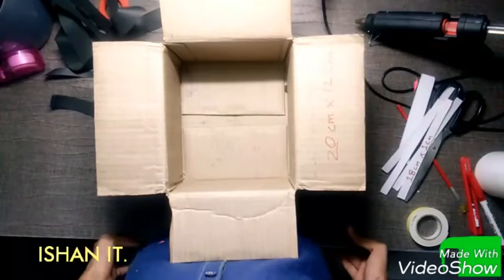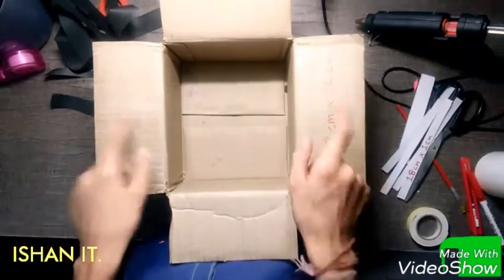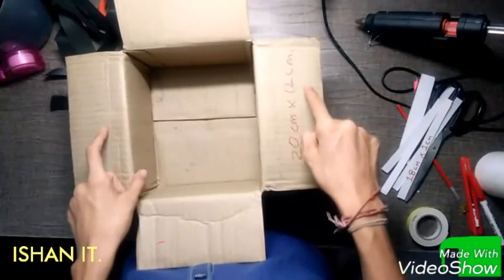Today I will show you how to make a coin sorter machine. You will need a cardboard box of 20cm x 12cm.